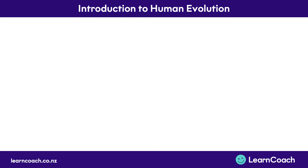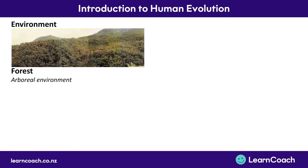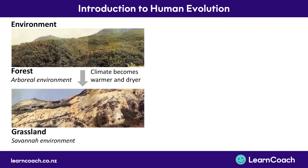The background knowledge you need to know is that millions of years ago the environment changed. It went from a forest environment, or an arboreal environment, and then the climate got warmer and drier and it became a grassland, also called a savannah environment.